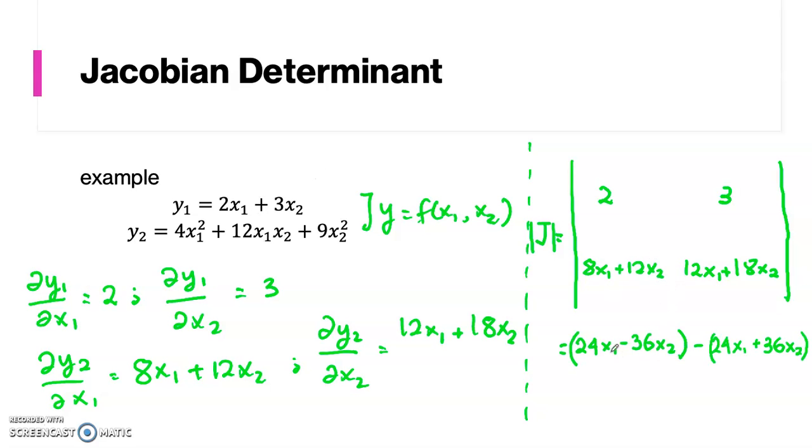Finding the determinant, we get 24x1 minus 36x2 plus, this should be plus, minus 24x1 plus 36x2. Here we see that it cancels out each other, so the Jacobian determinant is equal to 0.